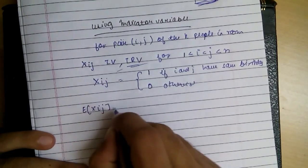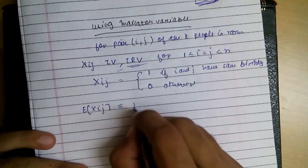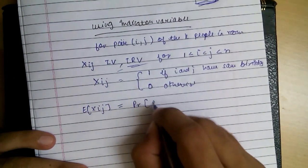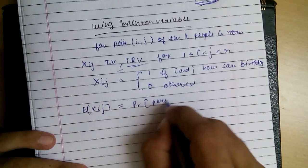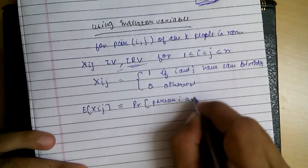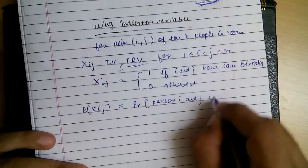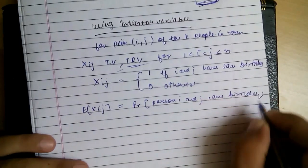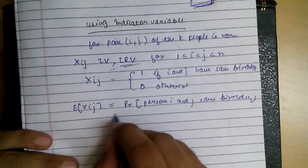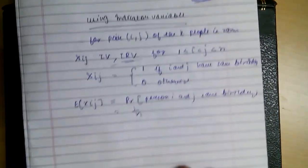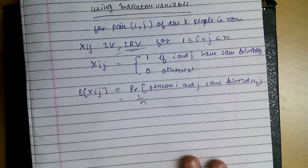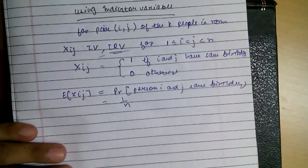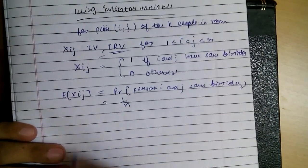The expectation of X sub ij is equal to the probability that person i and person j have the same birthday, which, as we found out, is 1 by n. So for the total, let X be the random variable that counts the number of pairs.